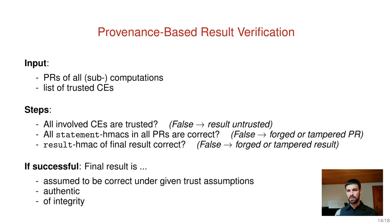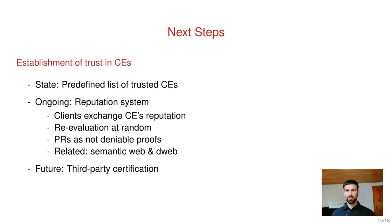If all three steps are successful, we can conclude that the final result is correct under the given trust assumptions — that it is authentic and of integrity. Regarding ongoing and future work, first I want to talk about establishment of trust in compute entities. In our current implementation, clients hold a predefined list of trusted compute entities. It is an ongoing project to develop a system in which clients exchange reputation information on compute entities. This reputation information is collected by selectively re-evaluating expressions and comparing the results with the ones delivered from the network. Provenance records are non-deniable proofs of the behavior of compute entities, which is helpful for this system.